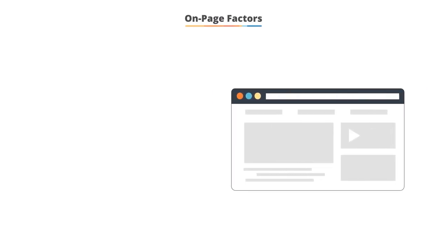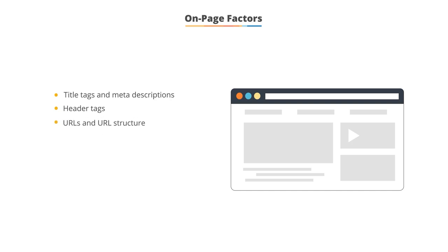The primary on-page relevancy factors I'll cover in this lesson are title tags and meta descriptions, header tags which are used for headlines and subheadings, website URLs and URL structure, image alt text, internal links, keyword usage, and sitemaps.